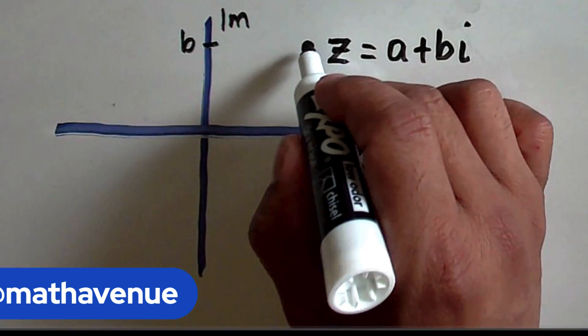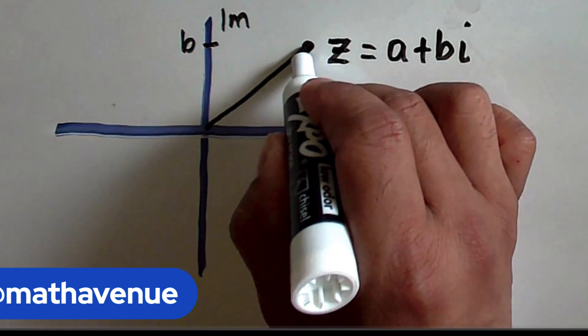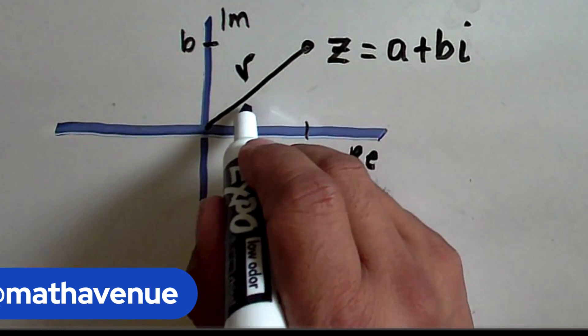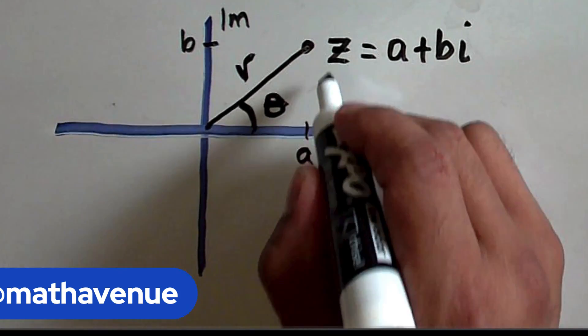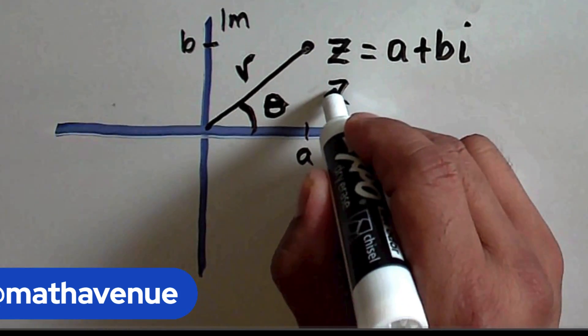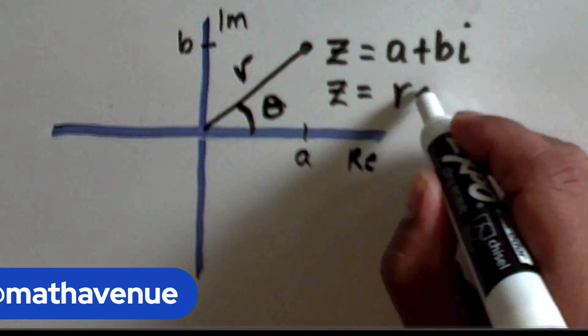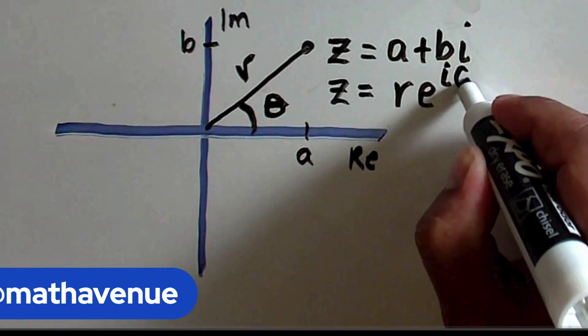However, this point z can also be described by taking this line, which is the radius, and the angle it formed with the positive real axis. And this point z in polar coordinate is equal to the radius times e raised to i times the angle, theta.